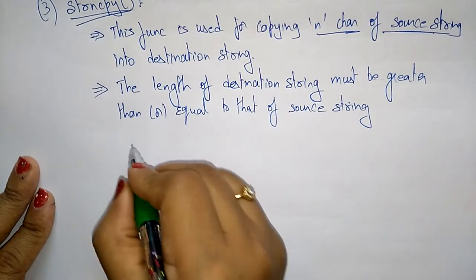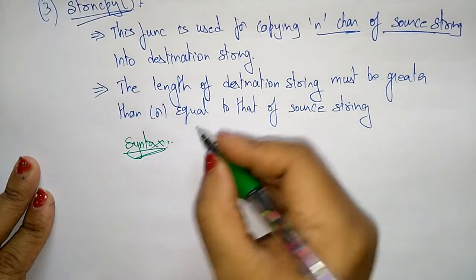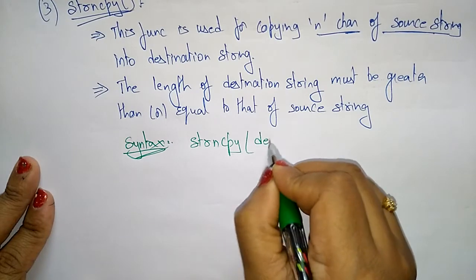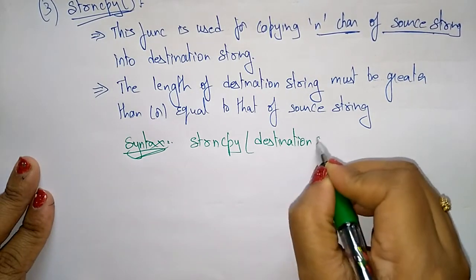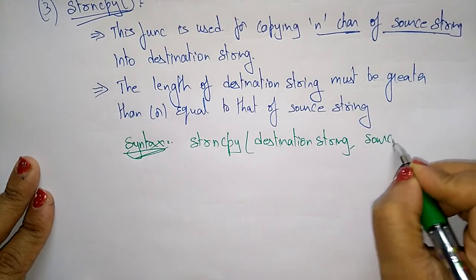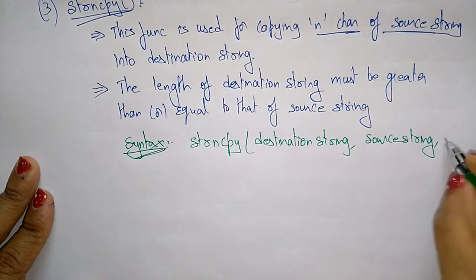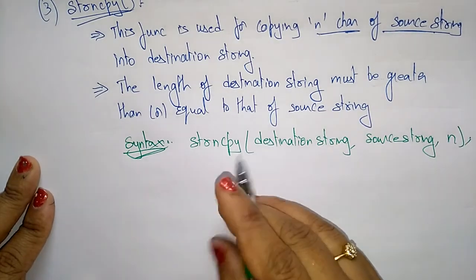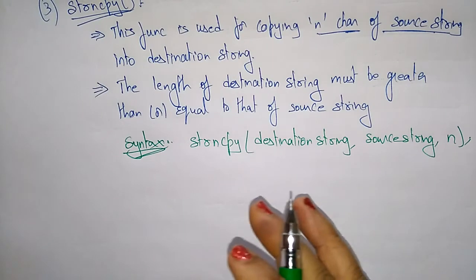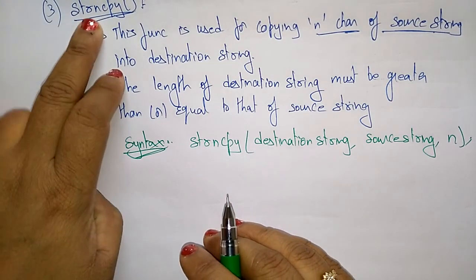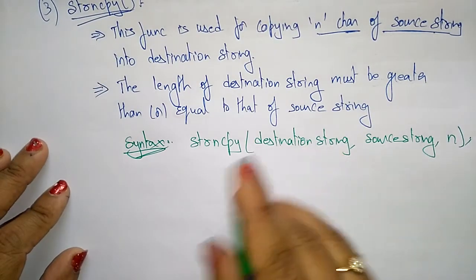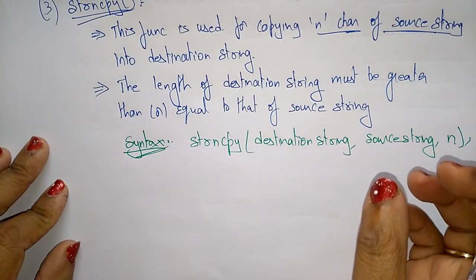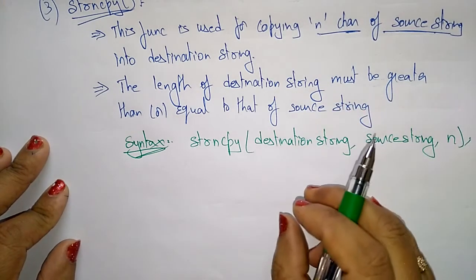Now let us see the syntax. The syntax is just like string copy: strncpy. Here you mention the destination string on the left side, comma, source string, and one more argument — that is n. n indicates the number of characters that have to be copied from source string to destination string. Don't be confused: string copy means copying from source to destination, whereas if n is mentioned it means n number of characters are selected from source and copied to destination.